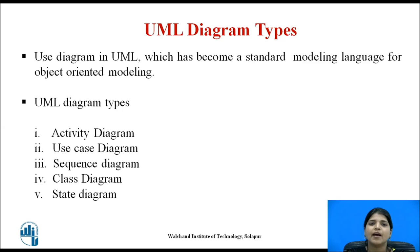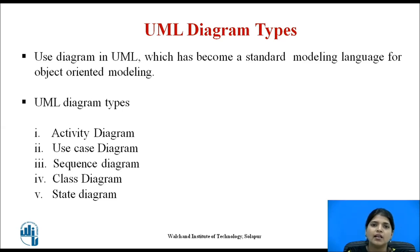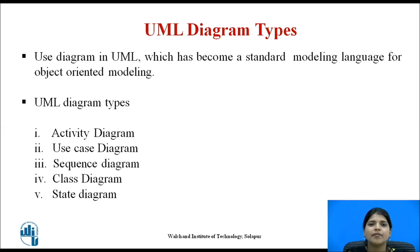And finally, the state diagram, which shows the states — meaning how the system reacts to internal as well as external events. So these are the total five types of UML diagrams.